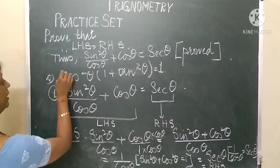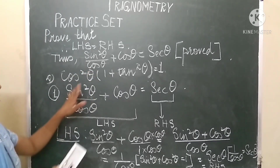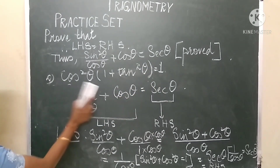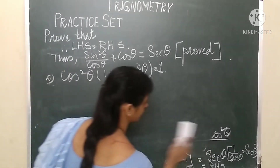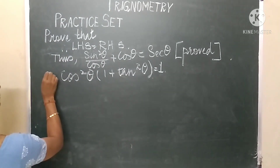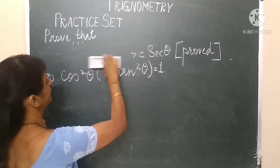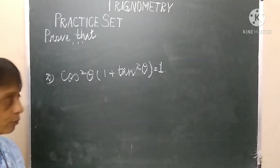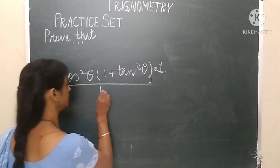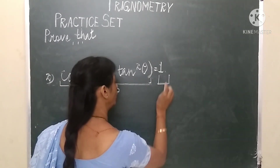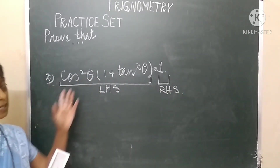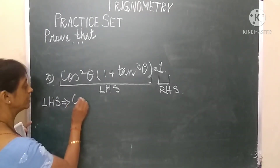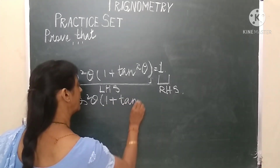Now for the second problem: prove that cos²θ × (1 + tan²θ) = 1. Here, cos²θ × (1 + tan²θ) is the left hand side and 1 is the right hand side. Let's begin with the left hand side and write down the expression: cos²θ × (1 + tan²θ).